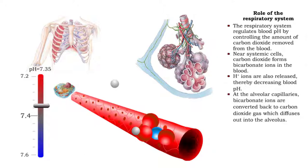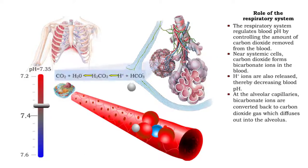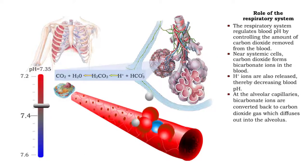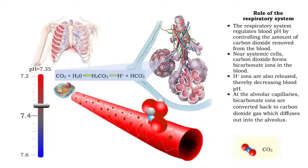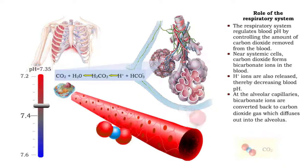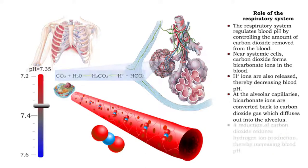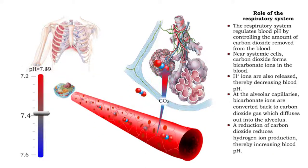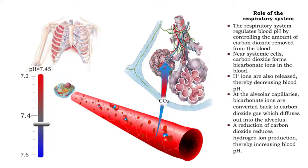At the alveolar capillaries, bicarbonate ions are converted back to carbon dioxide gas, which diffuses out into the alveolus. A reduction of carbon dioxide reduces hydrogen ion production, thereby increasing blood pH.